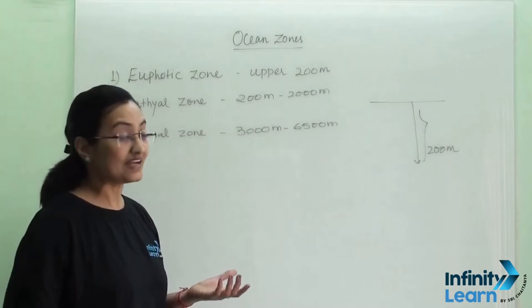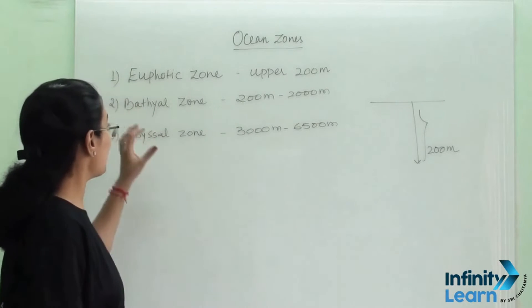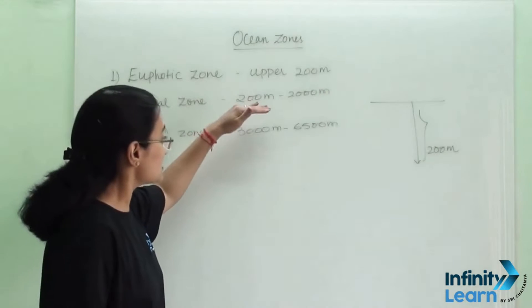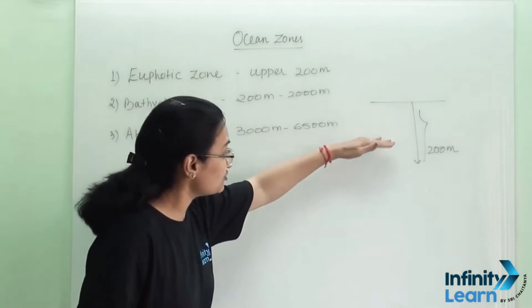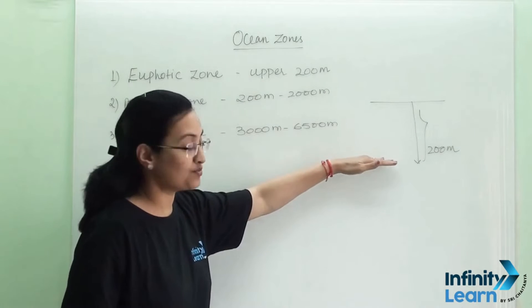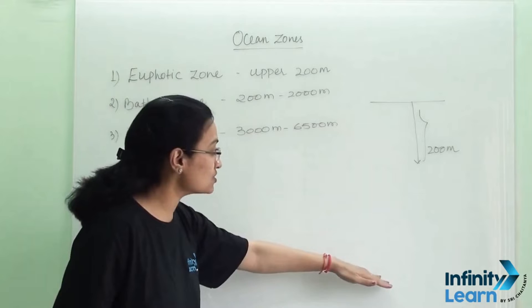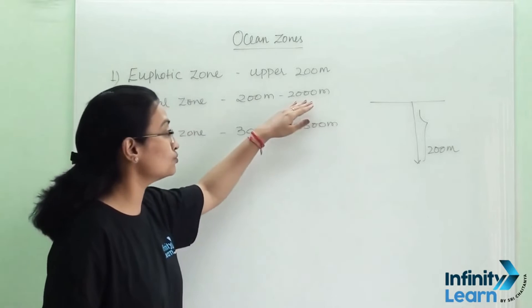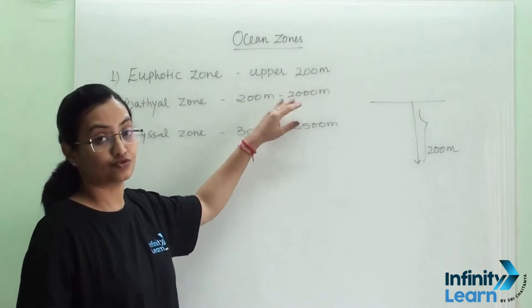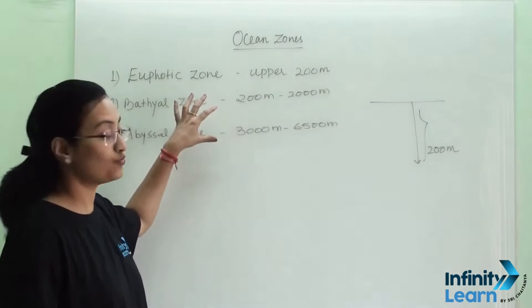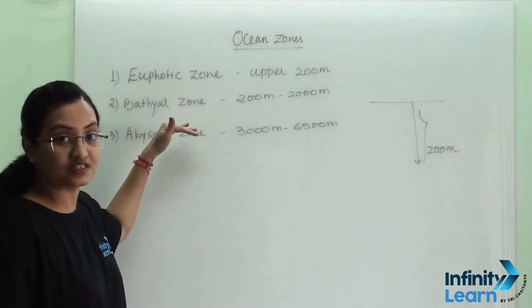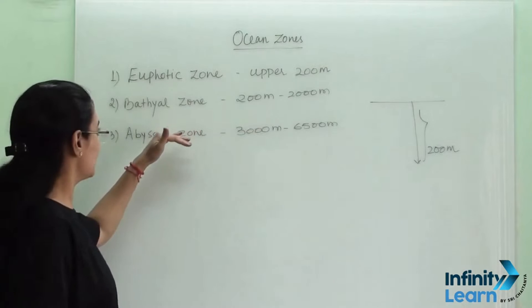The second zone is the bathyal zone and it starts after the euphotic zone. It starts from 200 meters and goes up till 2000 meters of depth. So the second zone which comes after the euphotic zone is the bathyal zone.